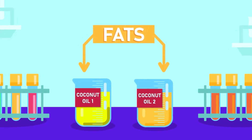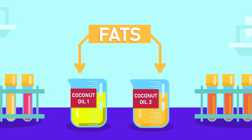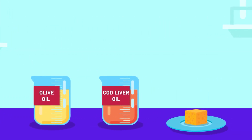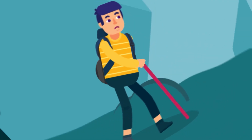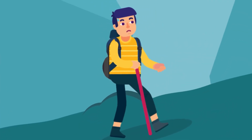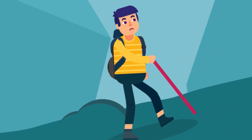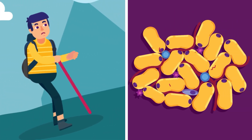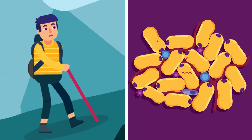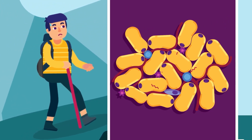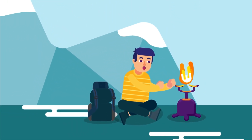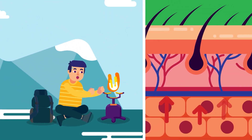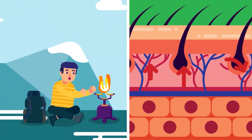We shall use the term fat to refer to both solid and liquid animal and vegetable fats. Fats have many functions in the body. To start with, it is an efficient source of storage of energy. It also acts as an insulating material present beneath the skin to prevent heat loss.